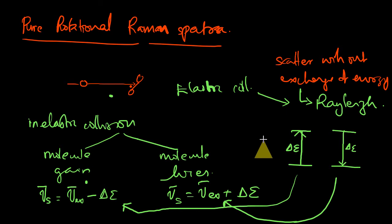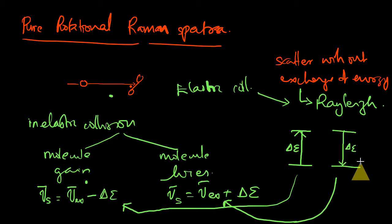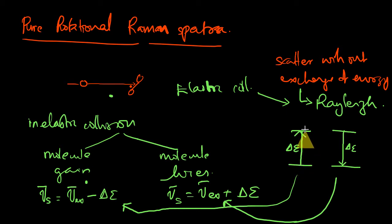This is the quantum mechanical picture of how a photon hits the molecule and what happens to the frequency of the scattered light, depending on whether the molecule is making an excitation or de-excitation. Now we are considering the rotational change happening in the molecule when the photon hits it. Let us analyze this more quantitatively, using the expressions for rotational energy that we already learned in rotational spectroscopy.